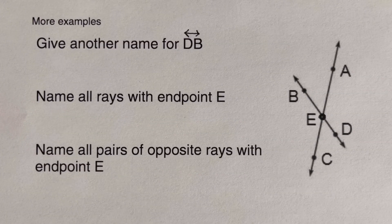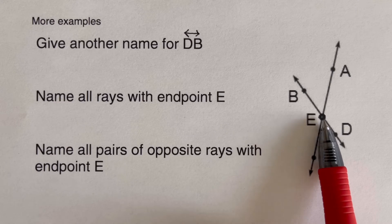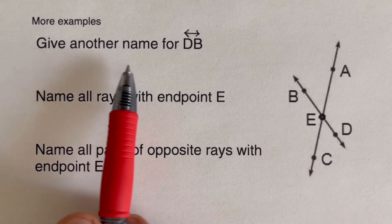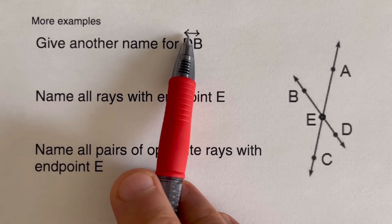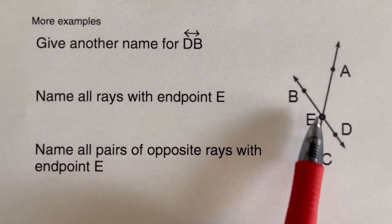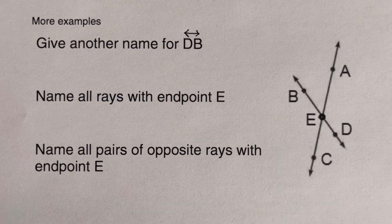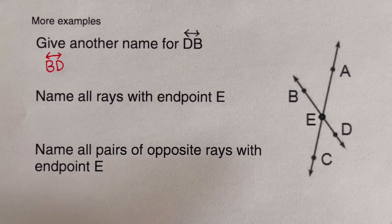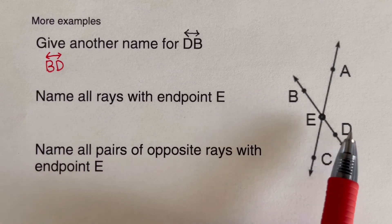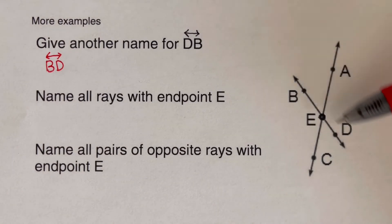Now let's go over this example. We are given two lines that intersect at point E — intersect means they are touching at point E. Give another name for line DB. DB is the diagonal line shown here. We can switch the letters and name it line BD. Other valid names include line ED, line DE, line BE, or line EB — any of those can be used to name this line.